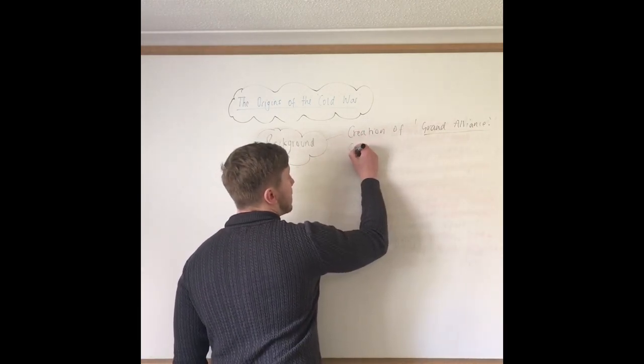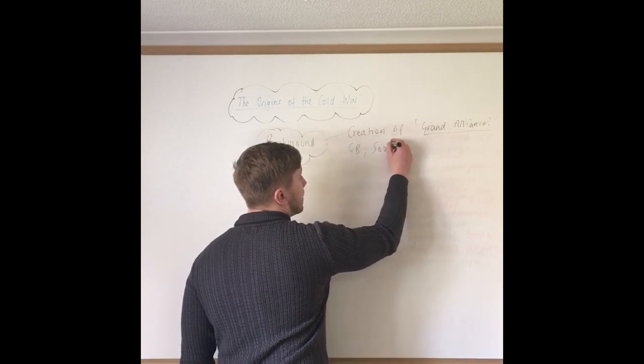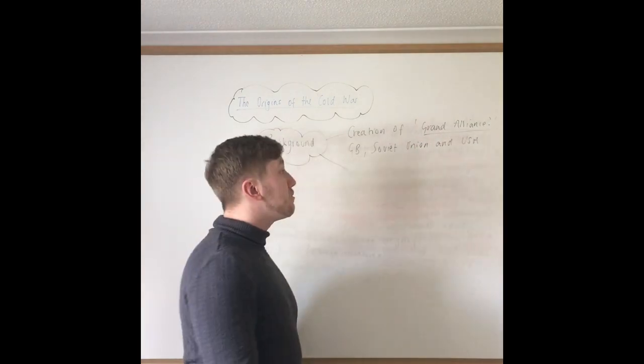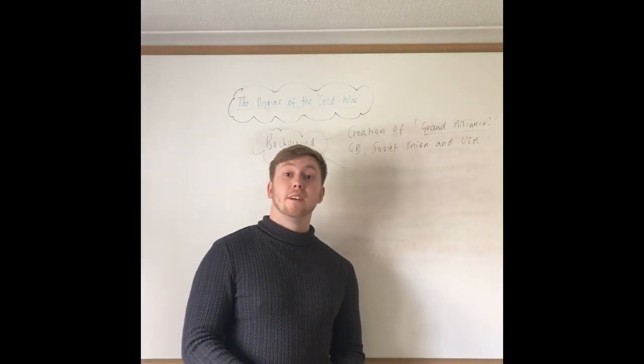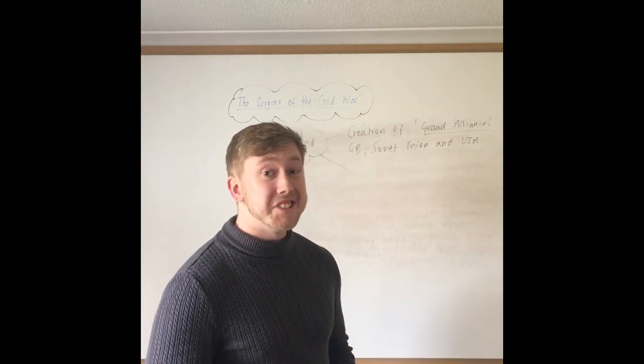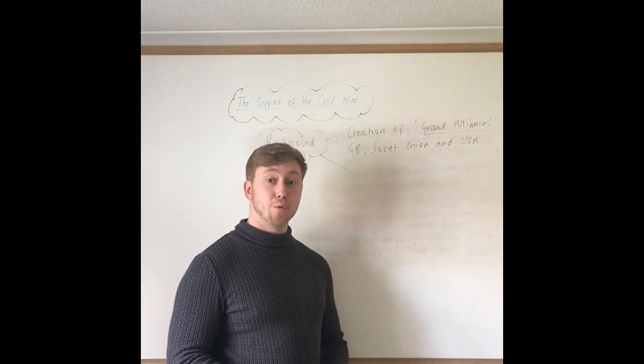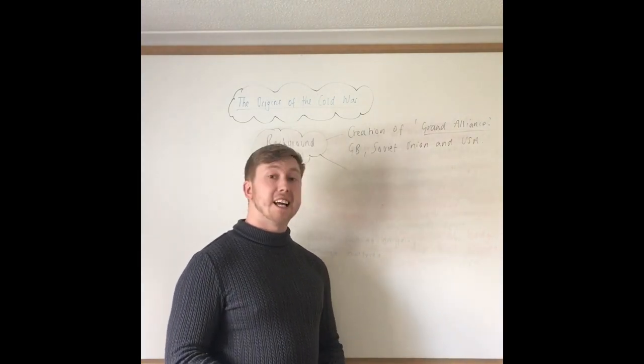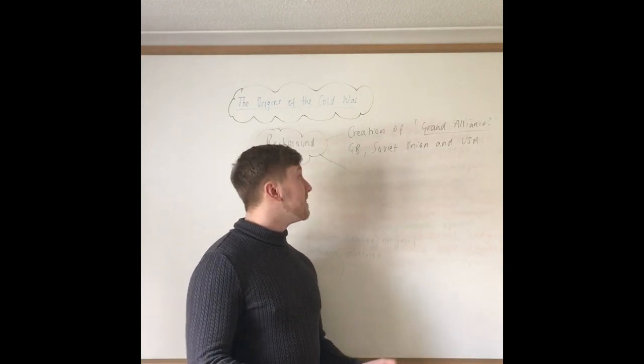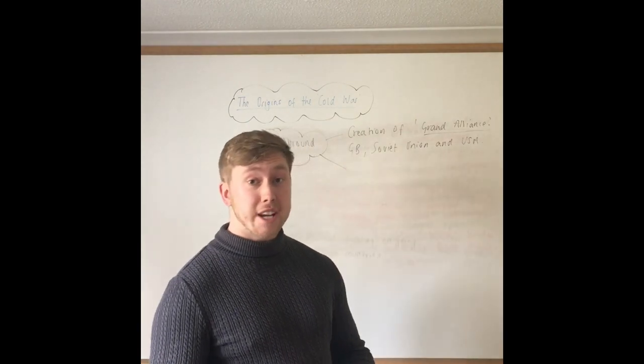The Grand Alliance was made up of three different members: Great Britain, Soviet Union and the US. Now, the Grand Alliance was set up to try and shape the New World because they realised that Nazi Germany was actually on the verge of collapse. It was near the end of World War II. These three countries realised that Nazi Germany was about to lose and they had to understand how the New World would look like. So, they basically came together to shape the New World.